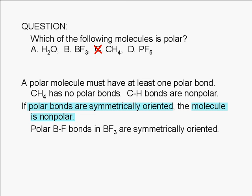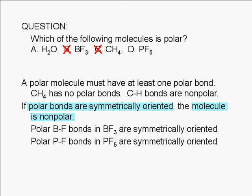Polar boron fluorine bonds in boron trifluoride are symmetrically oriented. Therefore, choice B is also incorrect. Polar phosphorus fluorine bonds in phosphorus pentafluoride are symmetrically oriented. Choice D is also incorrect.